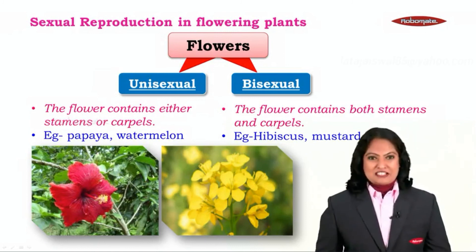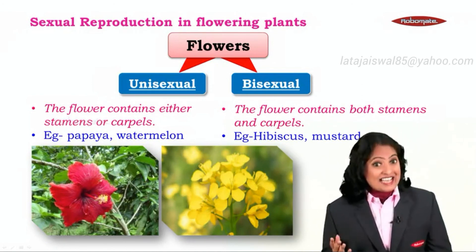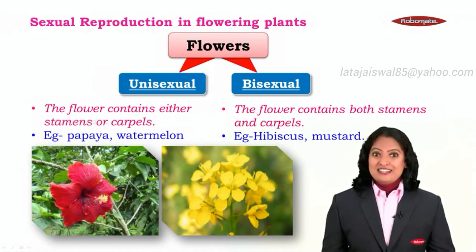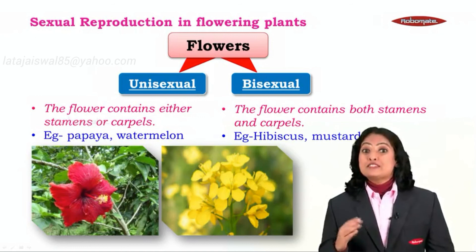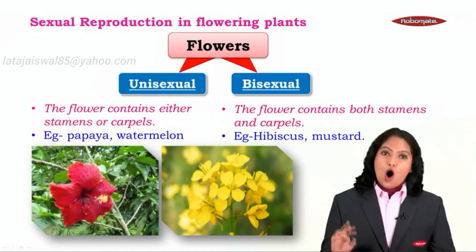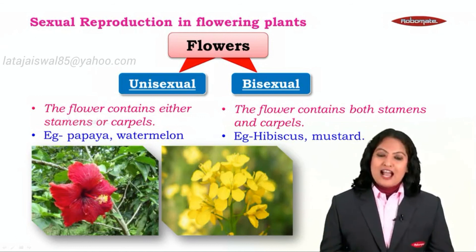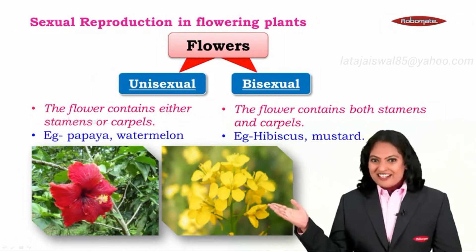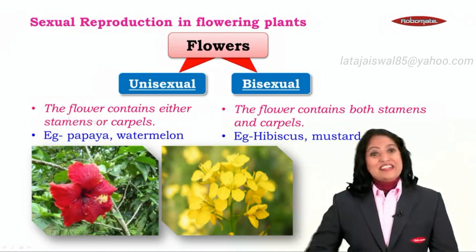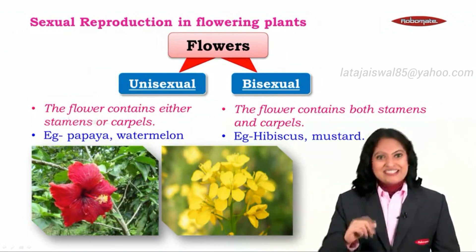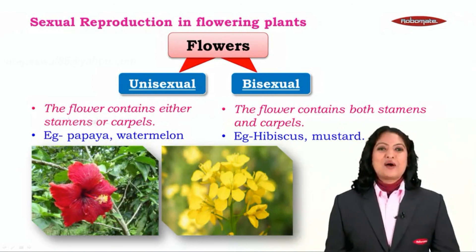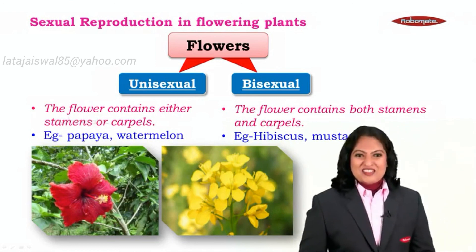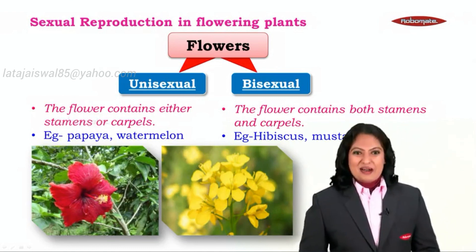So now we know: stamens are the male reproductive parts bearing pollen grains, carpels are the female reproductive parts bearing the egg cell. Flowers that either have stamens or carpels are called unisexual, while flowers like hibiscus and mustard that have both at a time are called bisexual. With this we end our module.